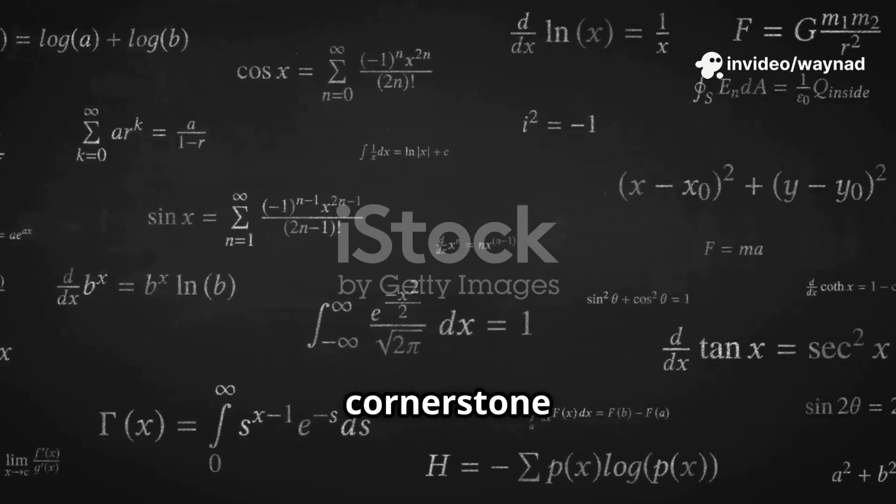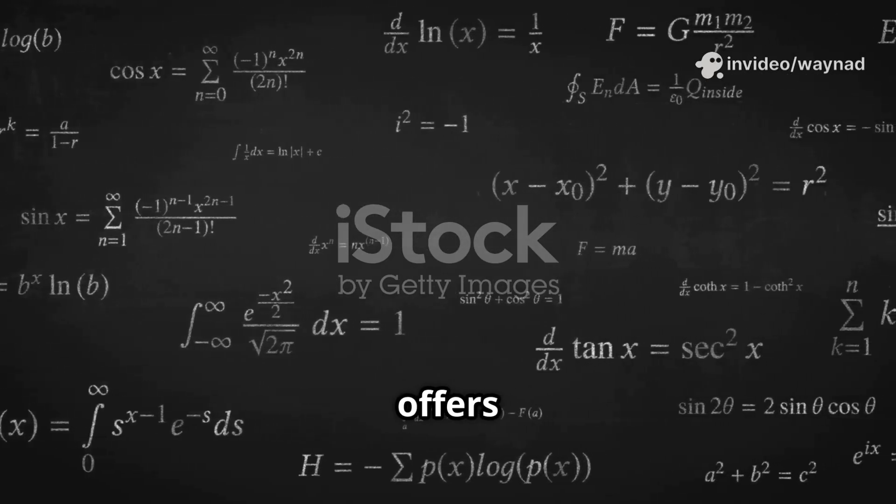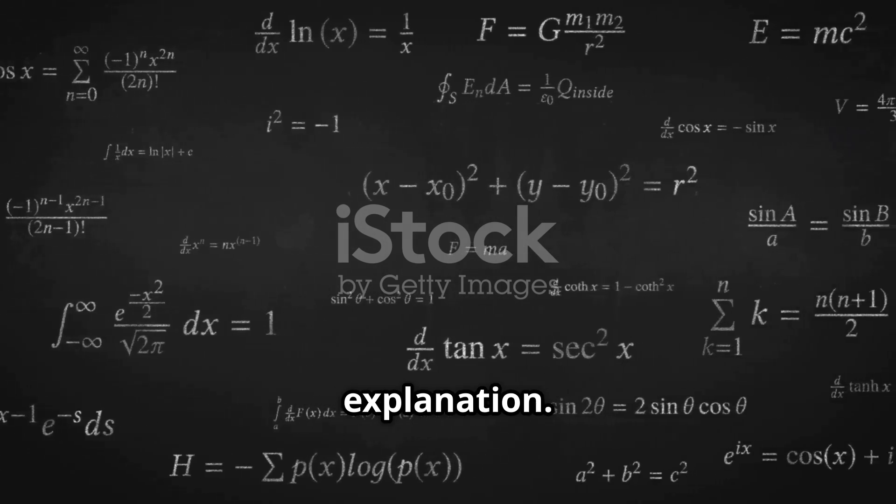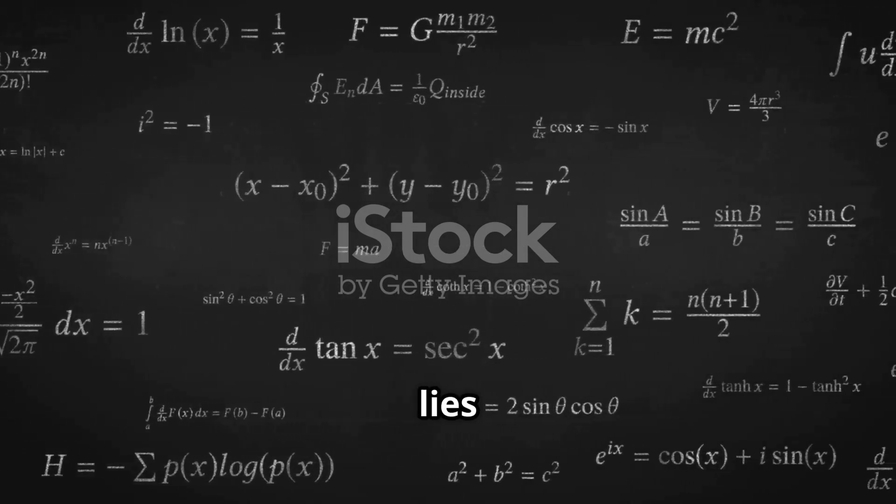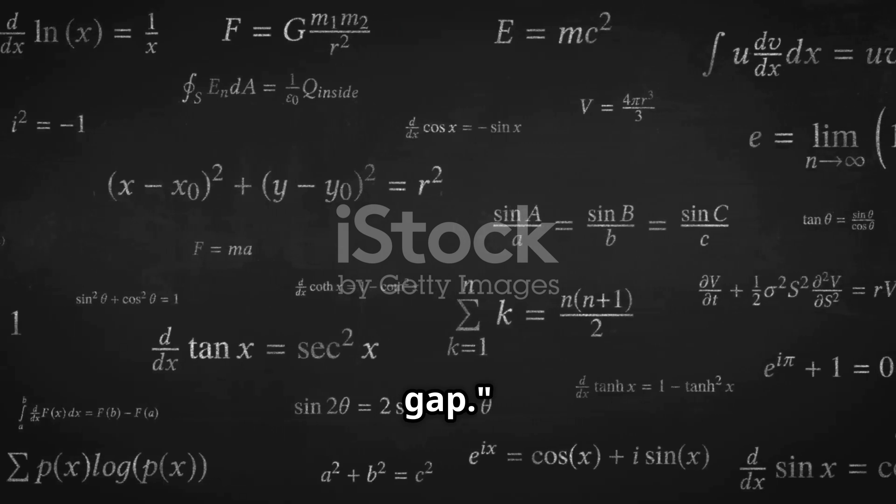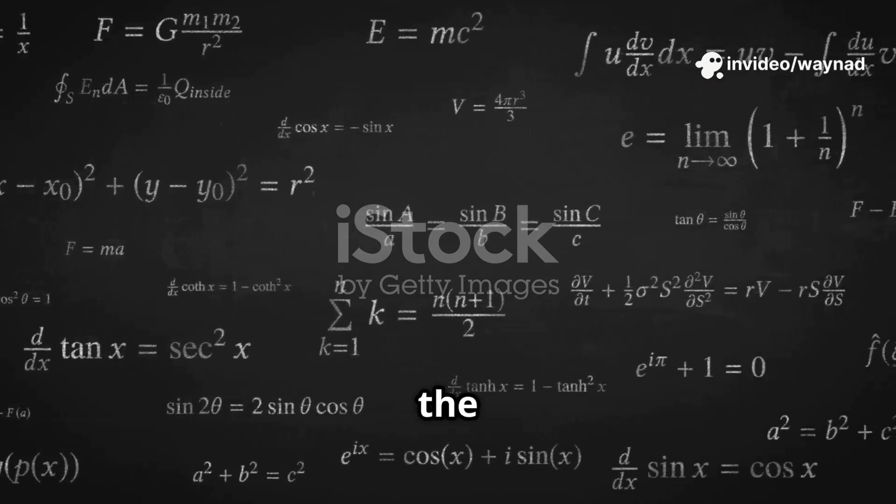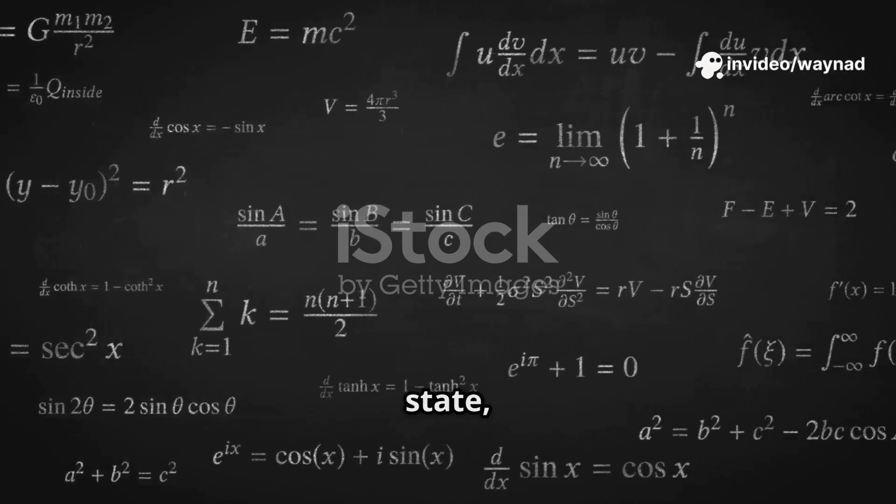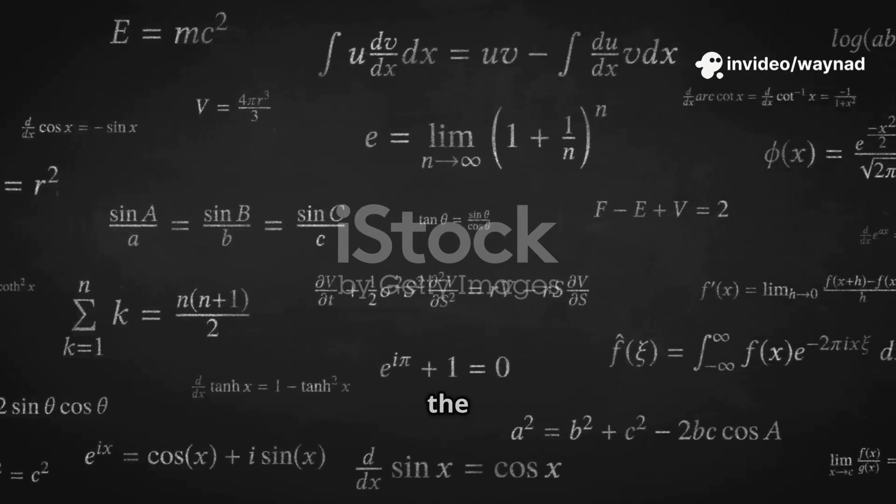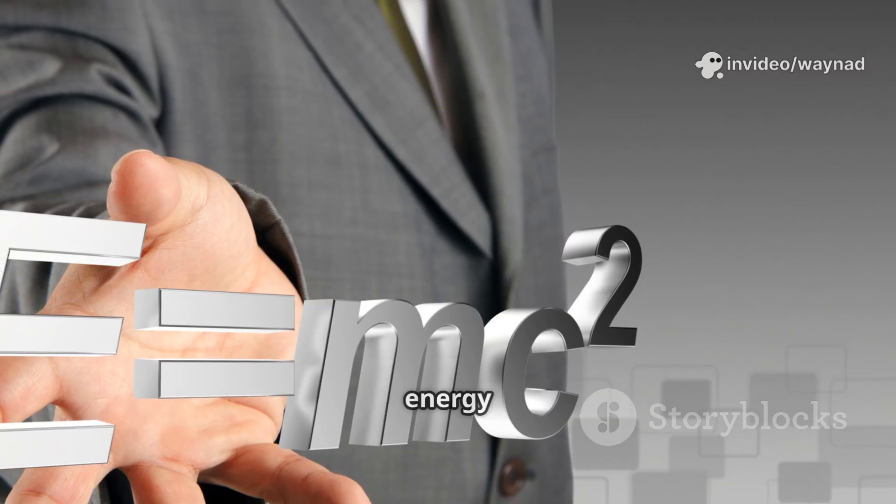Yang-Mills theory, a cornerstone of modern physics, offers a potential explanation. At the heart of this theory lies the concept of a mass gap. This mass gap refers to the energy difference between the vacuum state, the lowest energy state of the theory, and the next possible energy level.